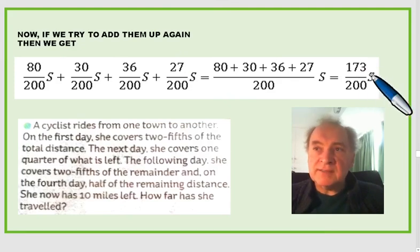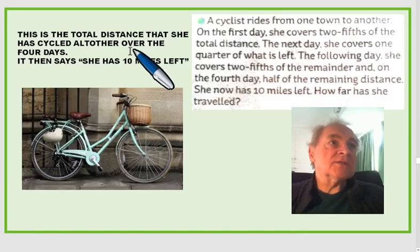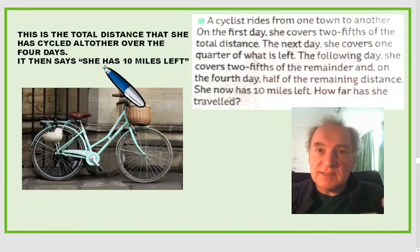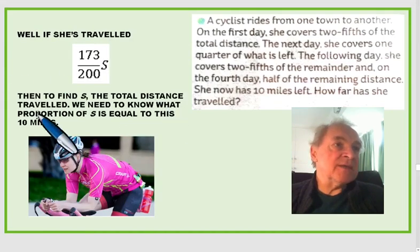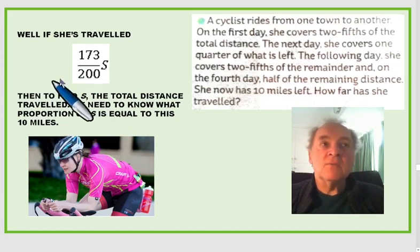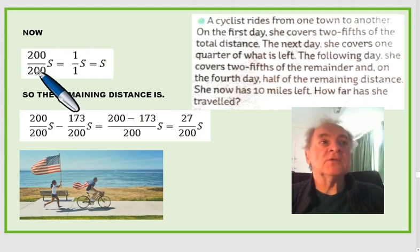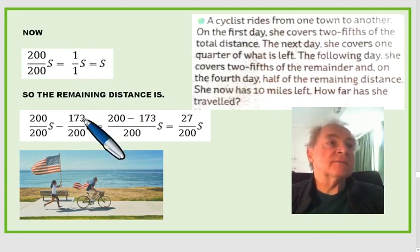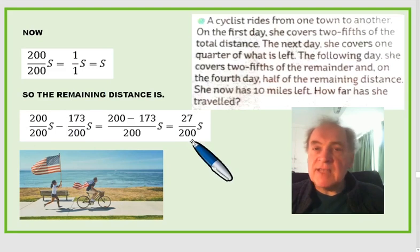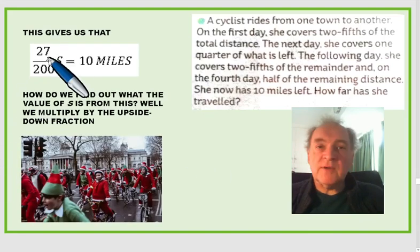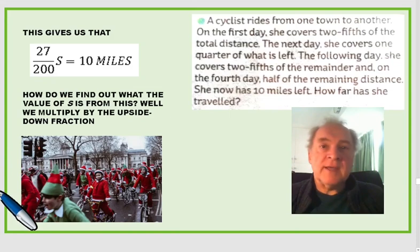So listing them all: eighty over two hundred, thirty over two hundred, thirty-six over two hundred, and twenty-seven over two hundred. Adding these up: eighty plus thirty plus thirty-six plus twenty-seven is one hundred and seventy-three over two hundred. That is the proportion of s she's travelled over the four days. She hasn't done it all yet. Two hundred over two hundred is a whole one, so two hundred minus one hundred and seventy-three is twenty-seven over two hundred. This twenty-seven two-hundredths that she has yet to go is equal to ten miles.